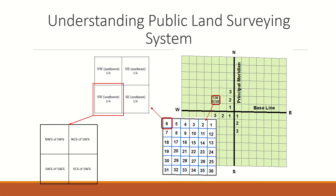A quarter section is then again divided into four quarter sections. Each quarter-quarter is 1,320 feet by 1,320 feet and consists of 40 acres. It is identified by where it is located within that quarter section. As you can see here, we have the northwest of the southwest, the southwest of the southwest, the southeast of the southwest, and the northeast of the southwest.